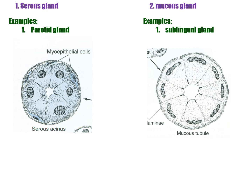Ducts of the salivary gland: interlobar and interlobular ducts are embedded in the connective tissue of lobes and lobules. Interlobar ducts are lined by stratified cuboidal or stratified columnar epithelium. Intralobular ducts are divided into intercalated ducts and striated ducts. Secretory acini empty into the intercalated duct, which merges into the striated duct. Intercalated ducts are lined by cuboidal epithelium; striated ducts are lined by columnar epithelium with striations in the basal cytoplasm.